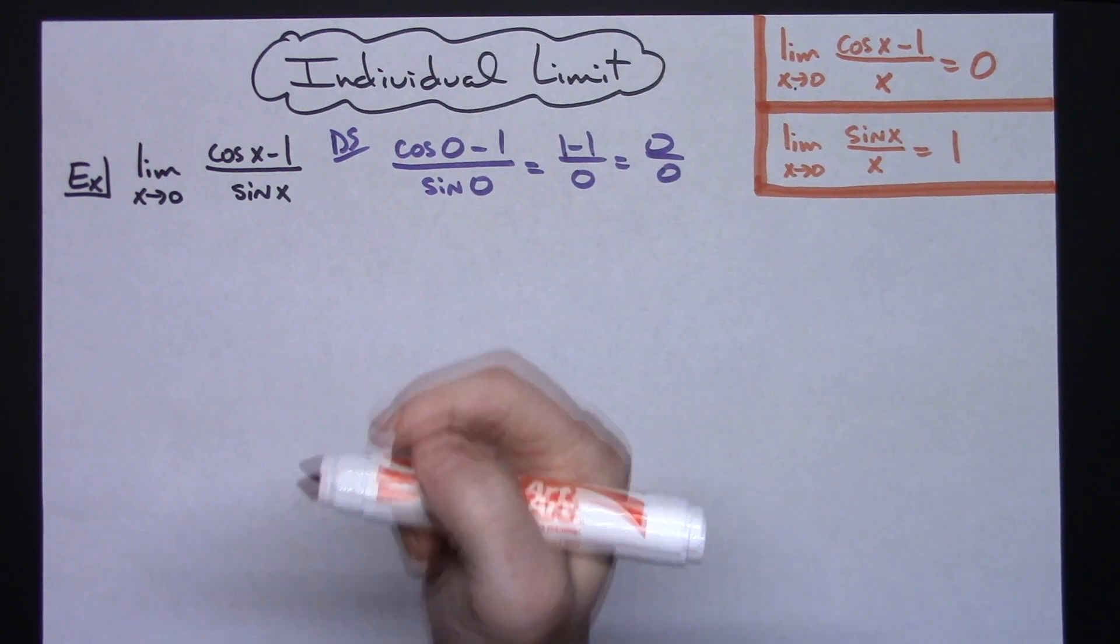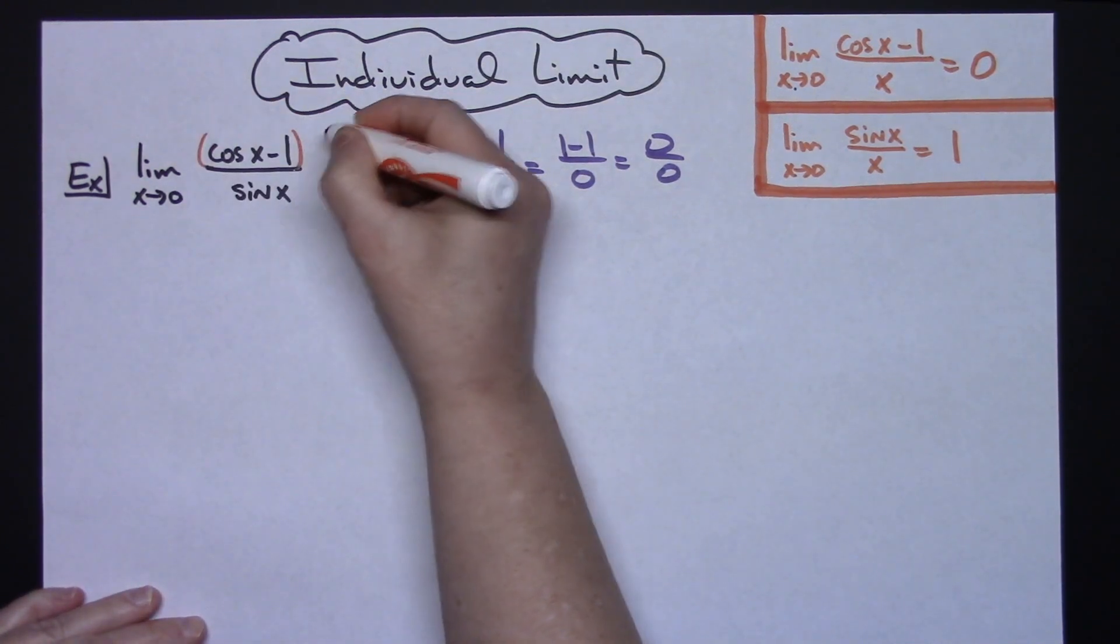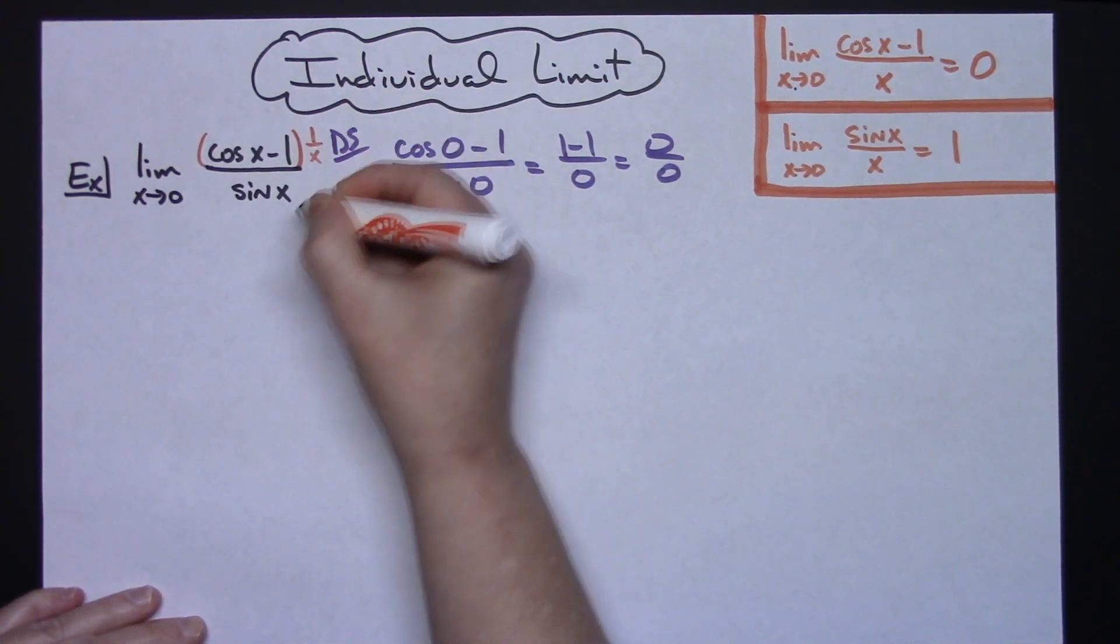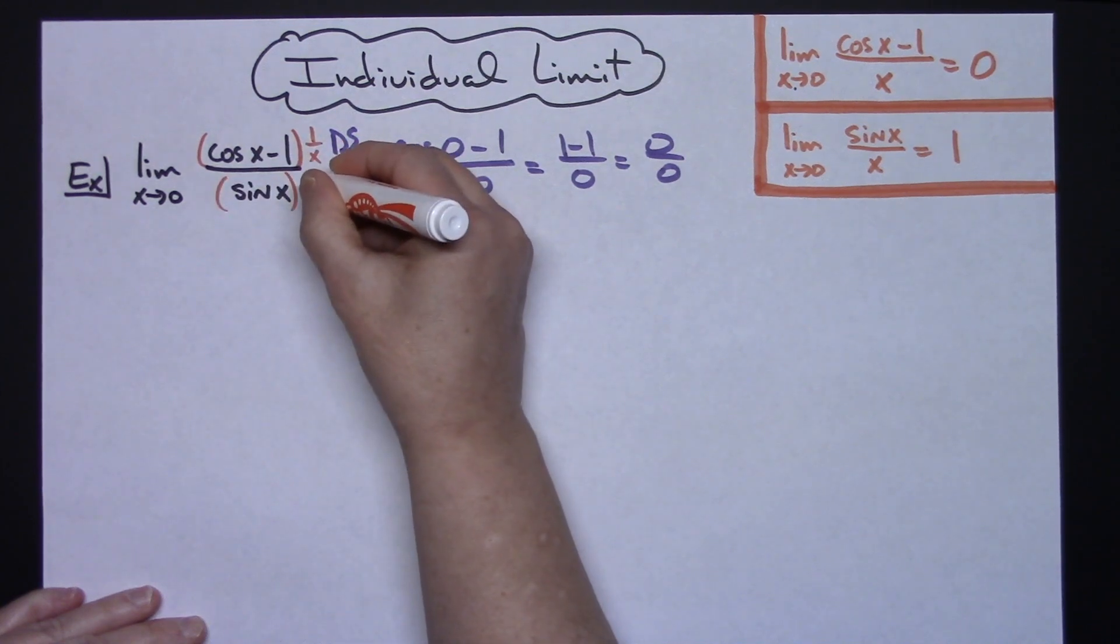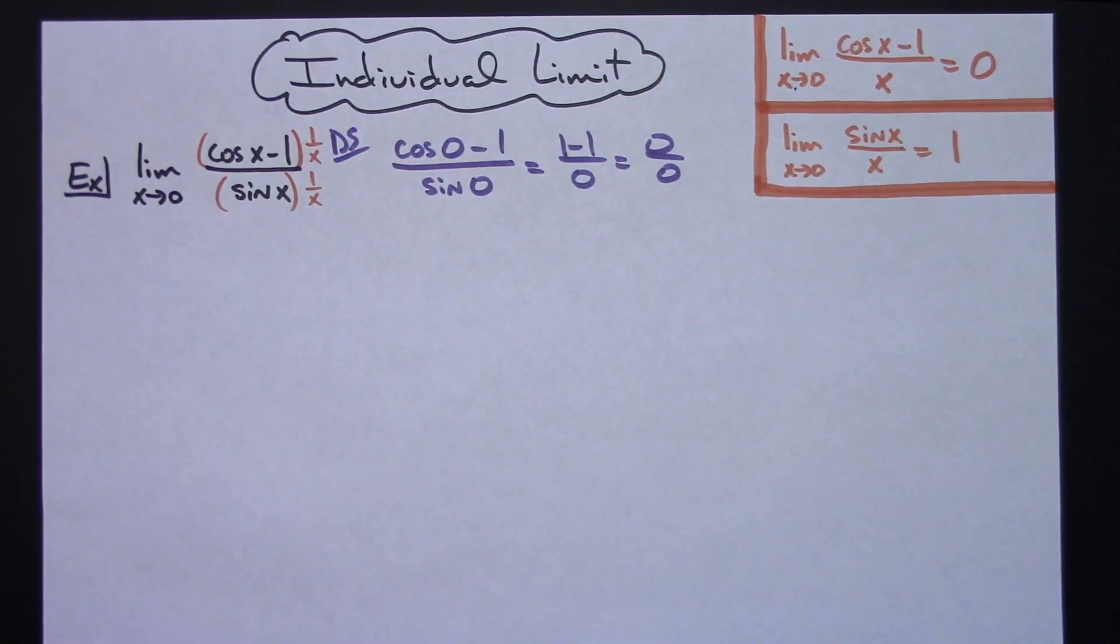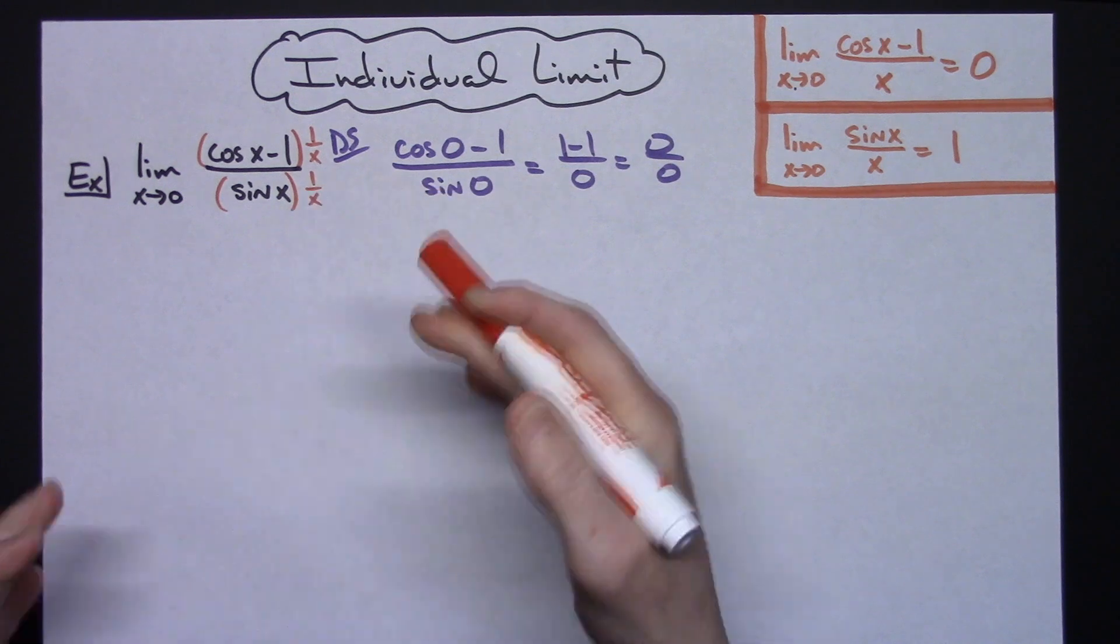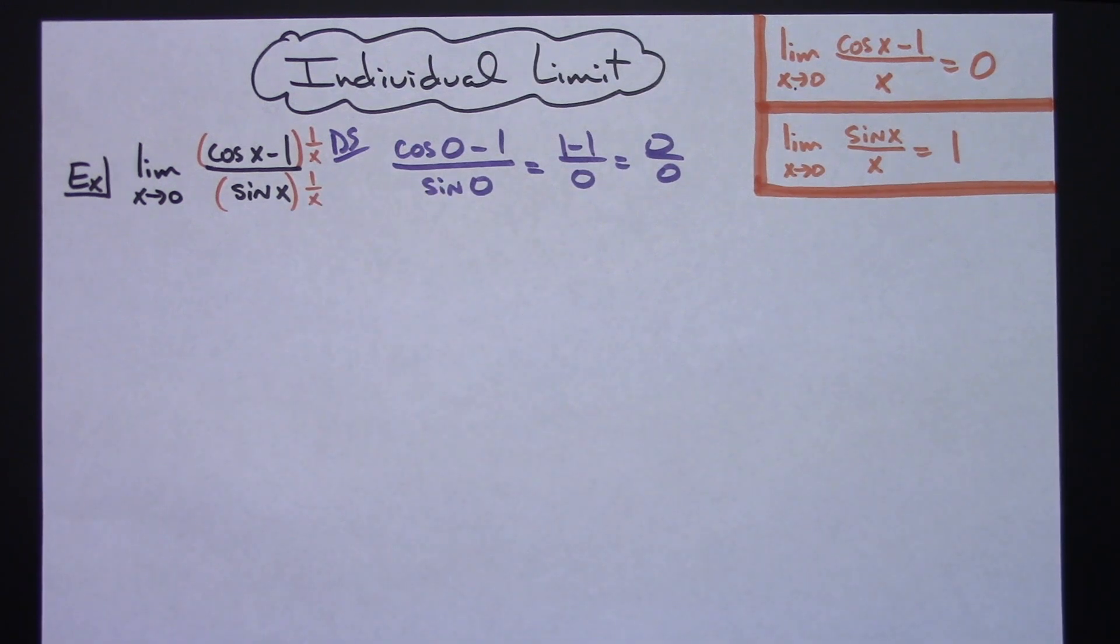So let's put that on this one right here. I'm going to multiply that top by 1 over X, and then I'm going to multiply the bottom by 1 over X. Anything over itself is always 1, so I have not altered this original equation.